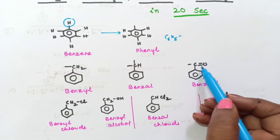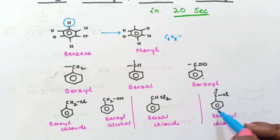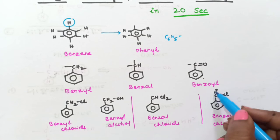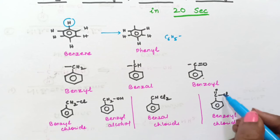Next is benzoyl. C double bond O should be there. So see here benzene ring, C double bond O is there. And chlorine is attached. So this is called as benzoyl chloride. So this much is benzoyl. Benzoyl chloride.